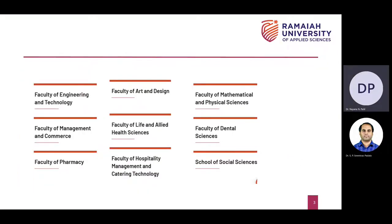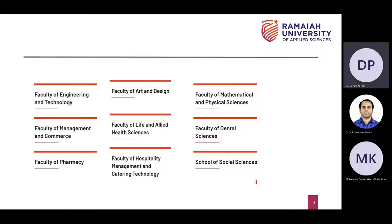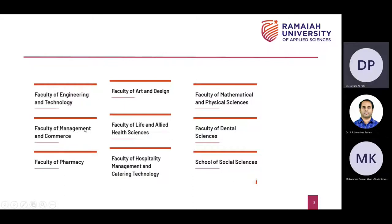ROAS is one brand under which all these faculties are organized. Civil engineering comes under the Faculty of Engineering and Technology. We have around 9 to 10 faculties, including the Faculty of Management and Commerce which houses MBA programs, pharmacy, and the Faculty of Engineering and Technology, which caters to engineering disciplines including civil engineering.